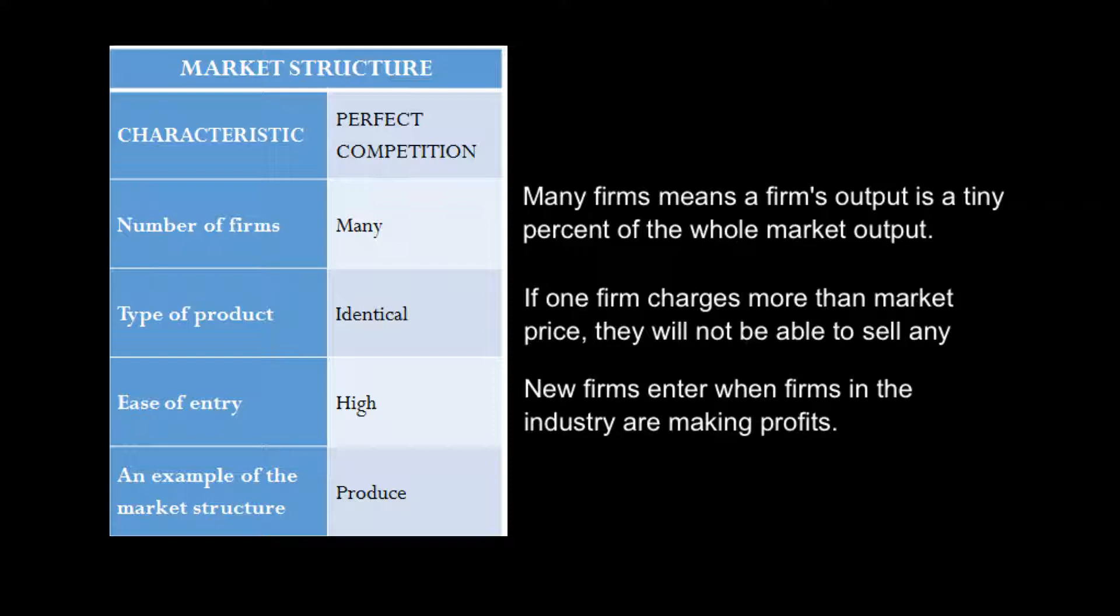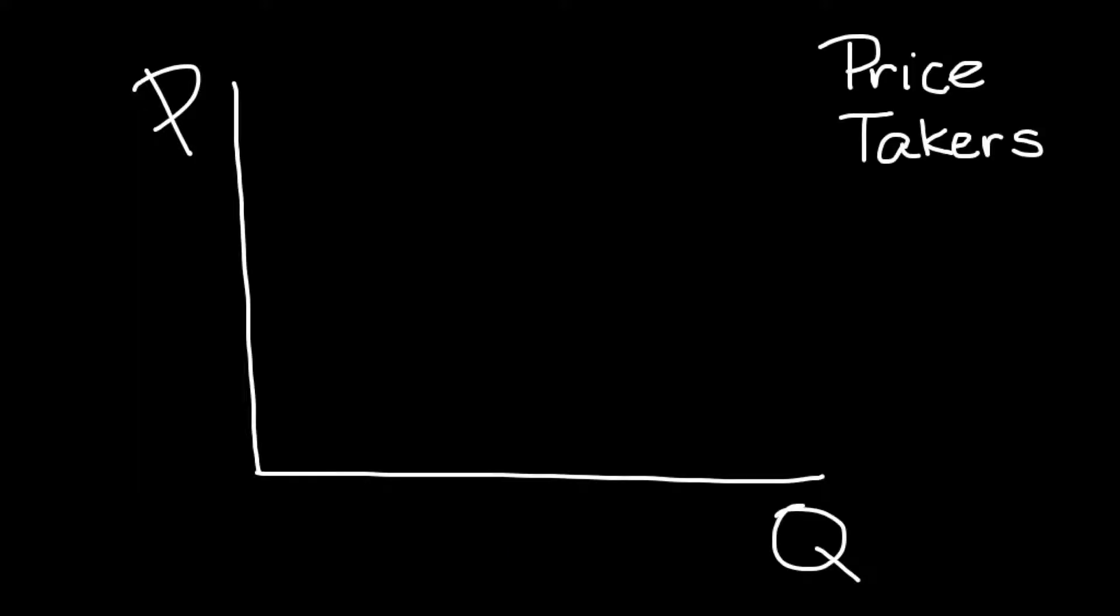So let's take a look next at the graphical implication of these things. In perfect competition, the significance of having a lot of firms that don't feel like they can shape the market and have identical products that they're selling is that the firms are called price takers. So whatever the market price is, this is the demand curve as it's perceived from the point of view of the firm.